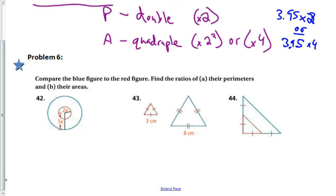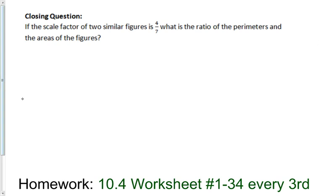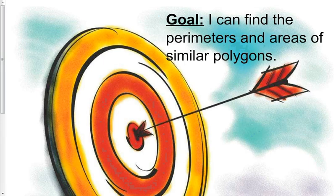That's a little application of this type of problem. For the closing question: if the scale factor of two similar figures is 4 to 7, what is the ratio of their perimeters and areas? That goes back to our goal for this section on similar polygons — finding their areas and perimeters. Have a great rest of your day.